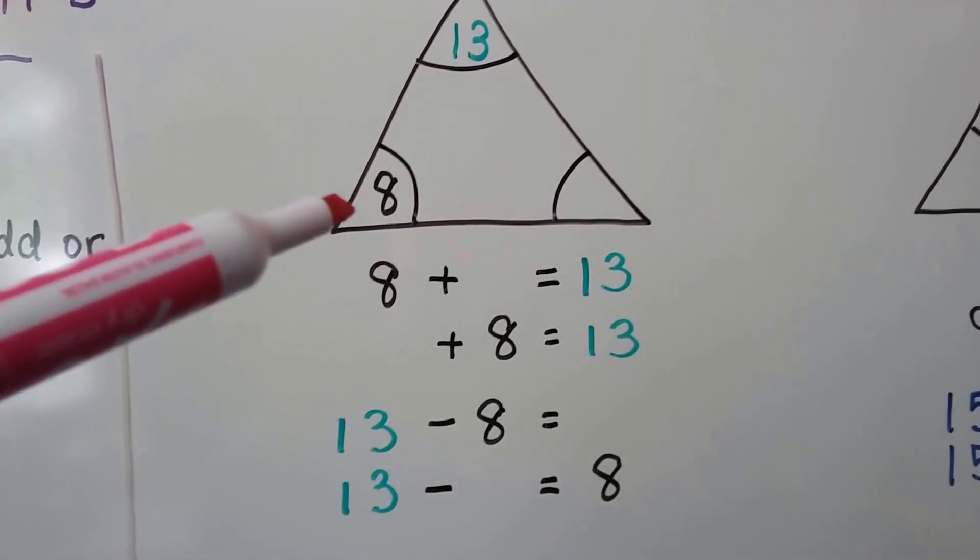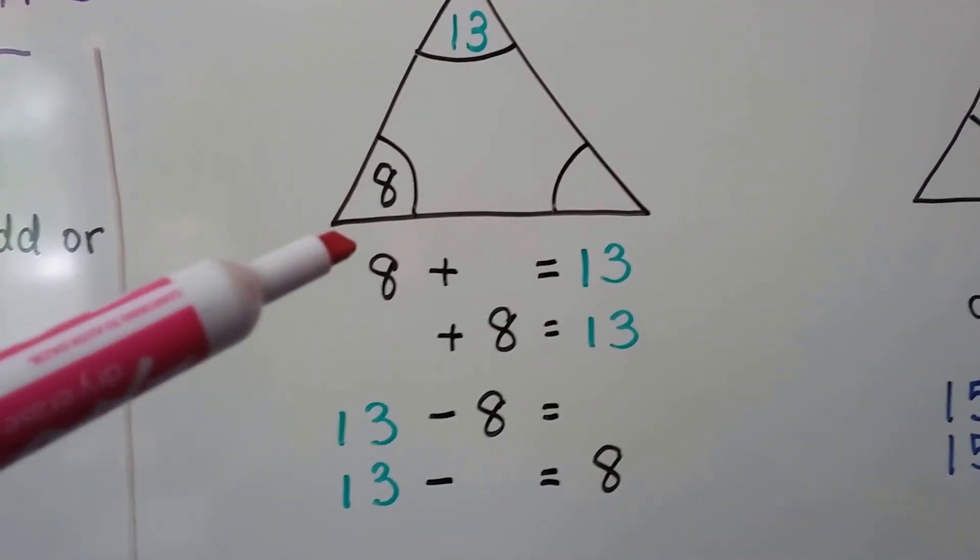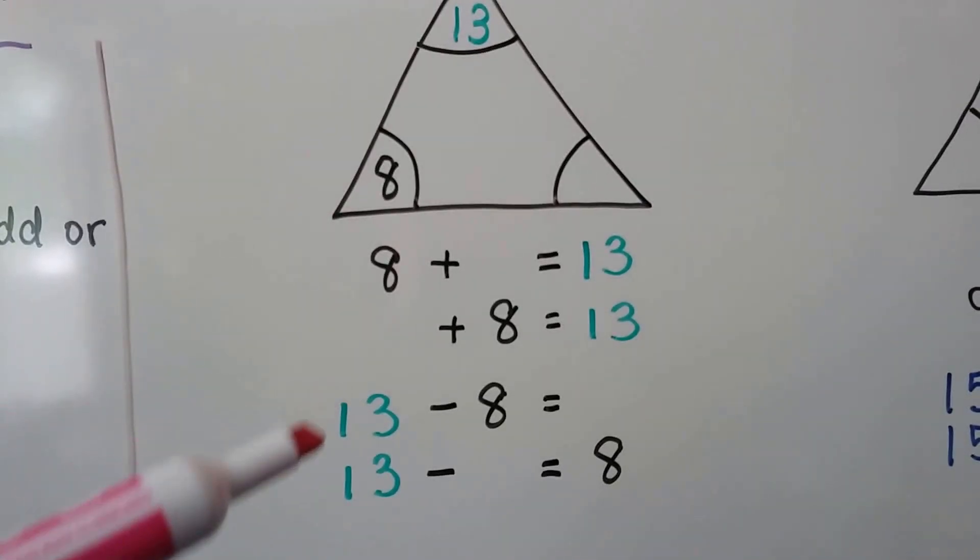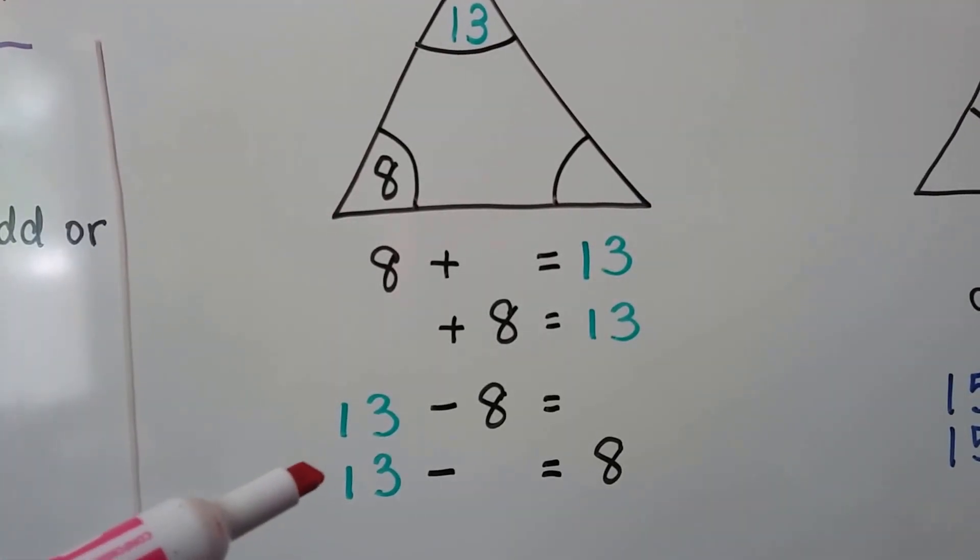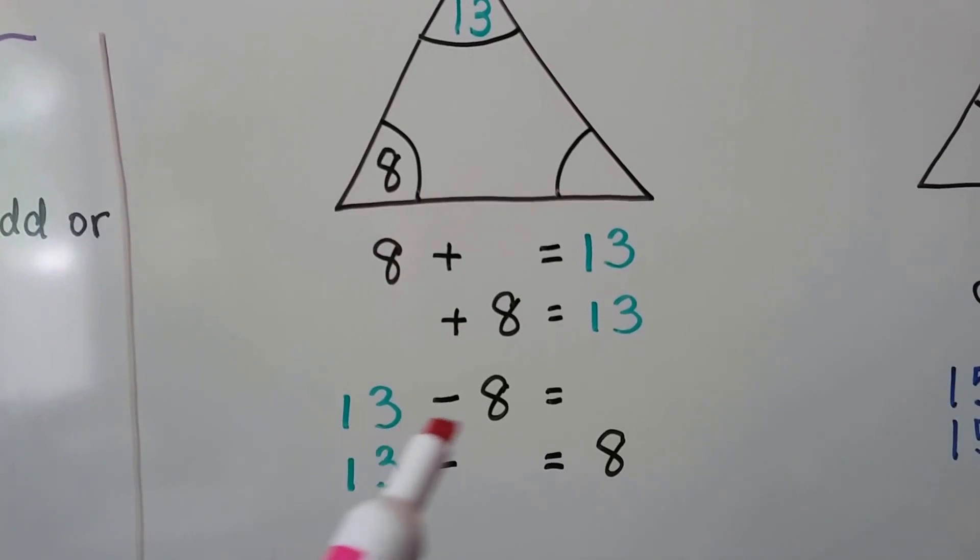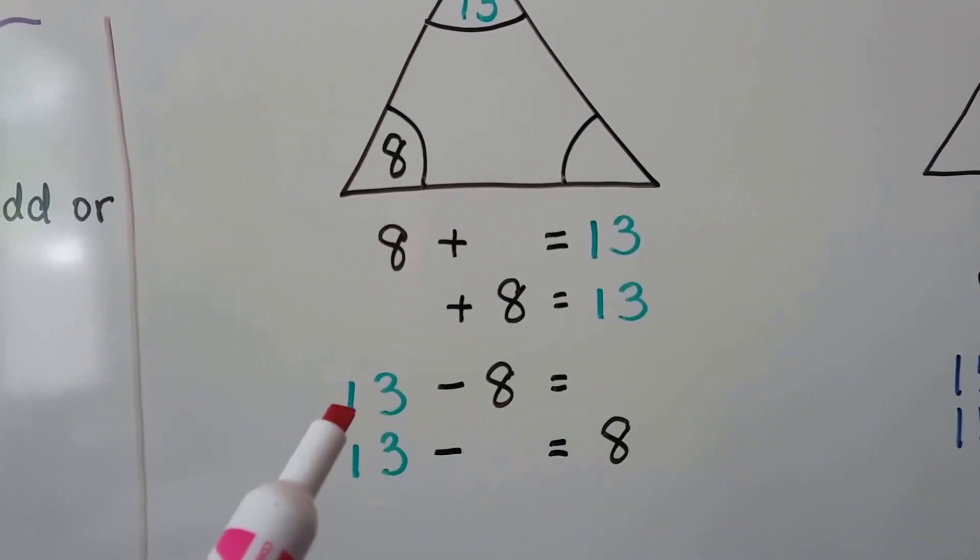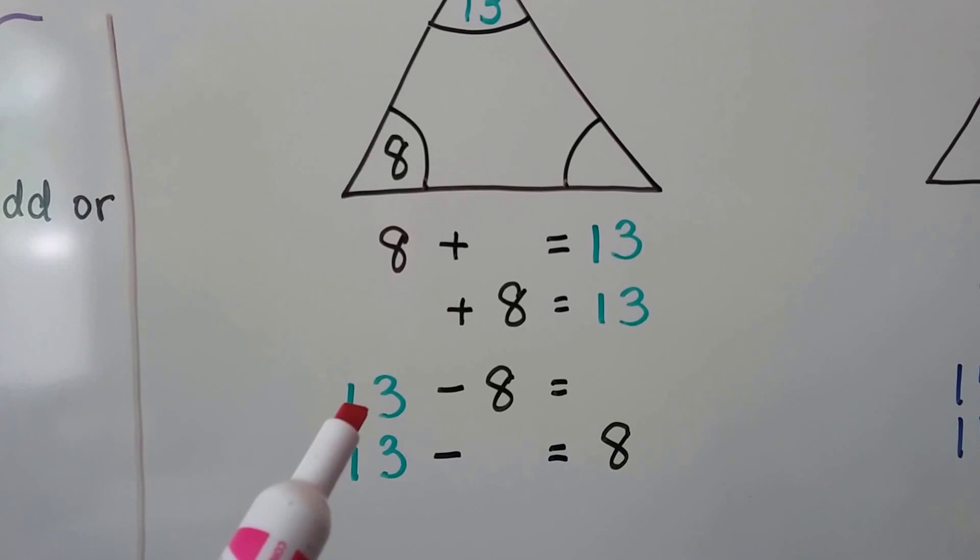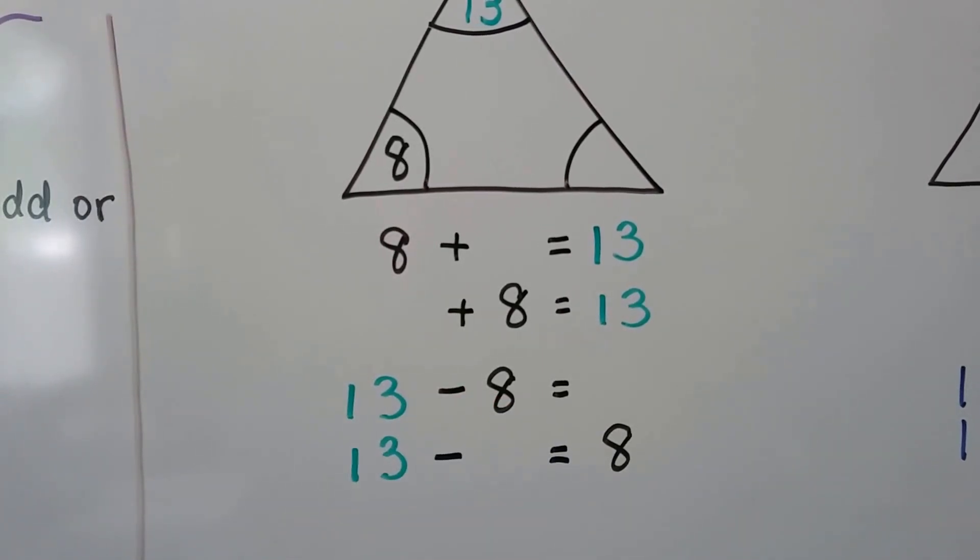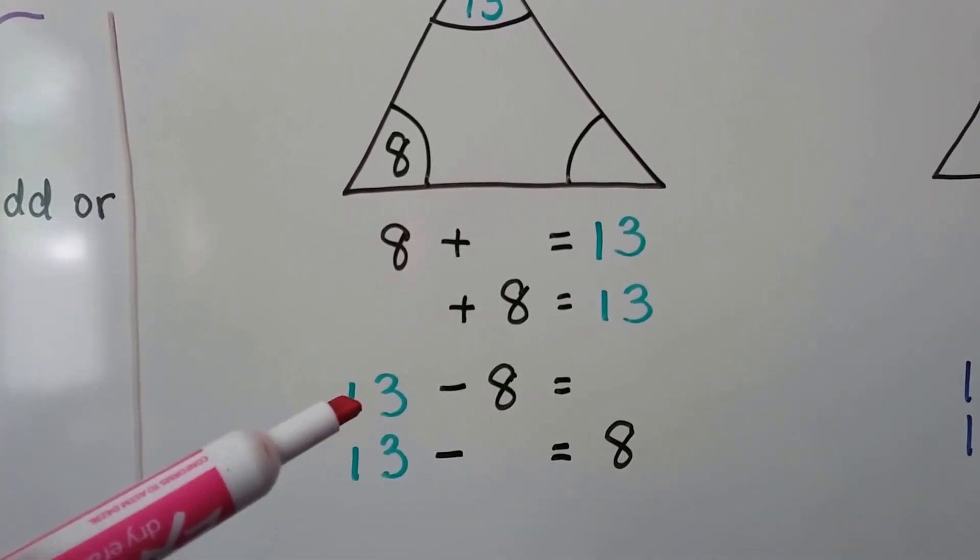We have a thirteen and an eight. So we know we're going to have two addition sentences and two subtraction sentences. When we look at the subtraction sentence here, we can answer thirteen minus eight. We can use a counting down method. From the thirteen,